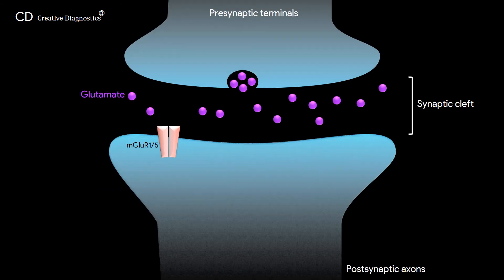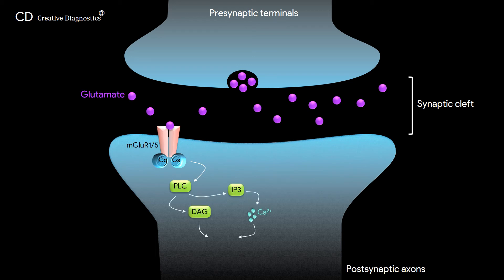Group 1 metabotropic receptors, mGluR1 and mGluR5, are largely expressed on the postsynaptic membrane and are mainly associated with Gq or Gs. Upon binding of glutamate, Group 1 metabotropic receptors trigger the activation of Phospholipase C, resulting in the generation of inositol IP3 and hydrolysis of phosphoinositides, which leads to calcium mobilization from the endoplasmic reticulum and protein kinase C activation. This signaling pathway is responsible for increased neuronal excitability.